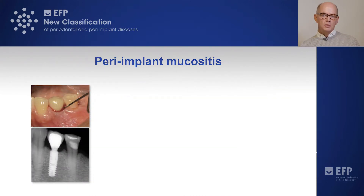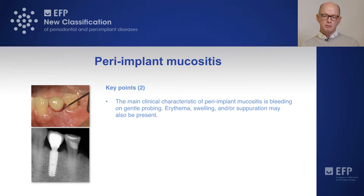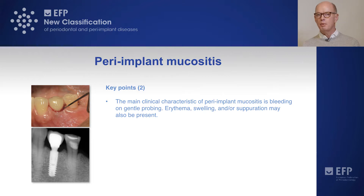Peri-implant mucositis from a clinical standpoint should be viewed with the main feature of bleeding on probing, which is far more important than visible signs. The visible signs of erythema, swelling, or suppuration are features that may be present in addition to bleeding on probing, but bleeding on probing is the most important feature.